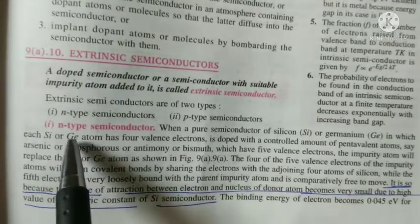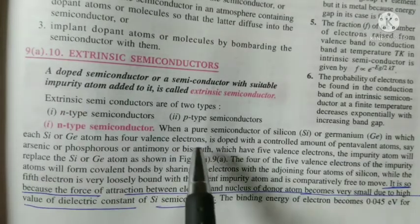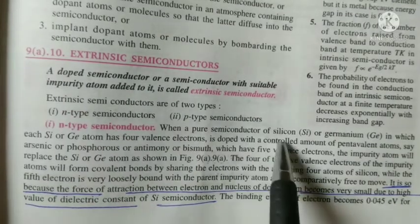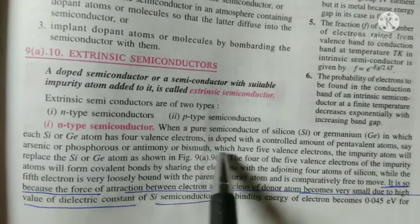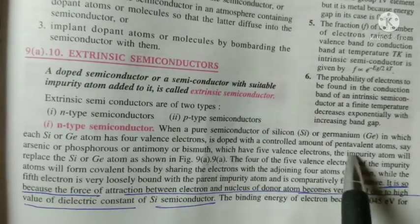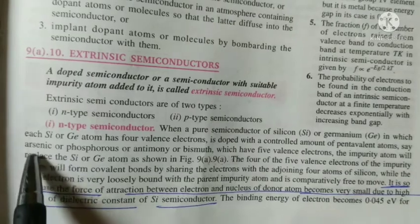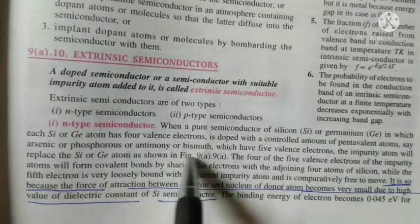We here discuss about the N-type semiconductor. When a pure semiconductor of silicon or germanium is added or doped with controlled amount of pentavalent impurity atom, say arsenic, phosphor, antimony, or bismuth, which have five valence electrons...